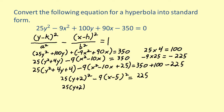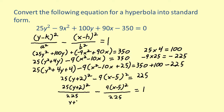Next, divide both sides by 225. Finally, simplify. The standard form equation of the hyperbola is y plus 2 squared all over 9 minus x minus 5 squared all over 25 equals 1.